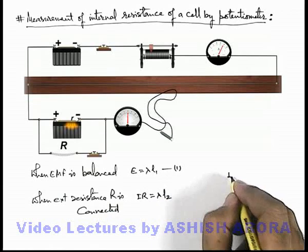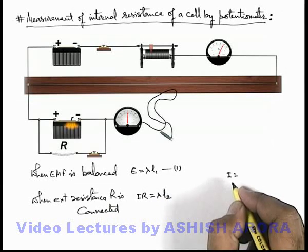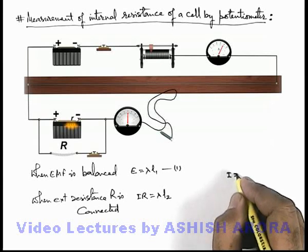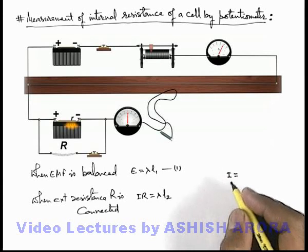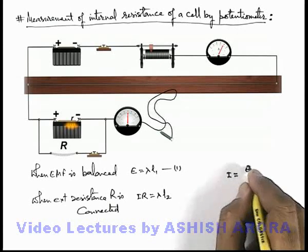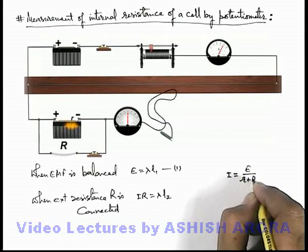The current I, here you can see, is flowing only in the circuit of battery and external resistance, because in the situation of null deflection, no current is there in the galvanometer. So here the value of current is E by r plus R.